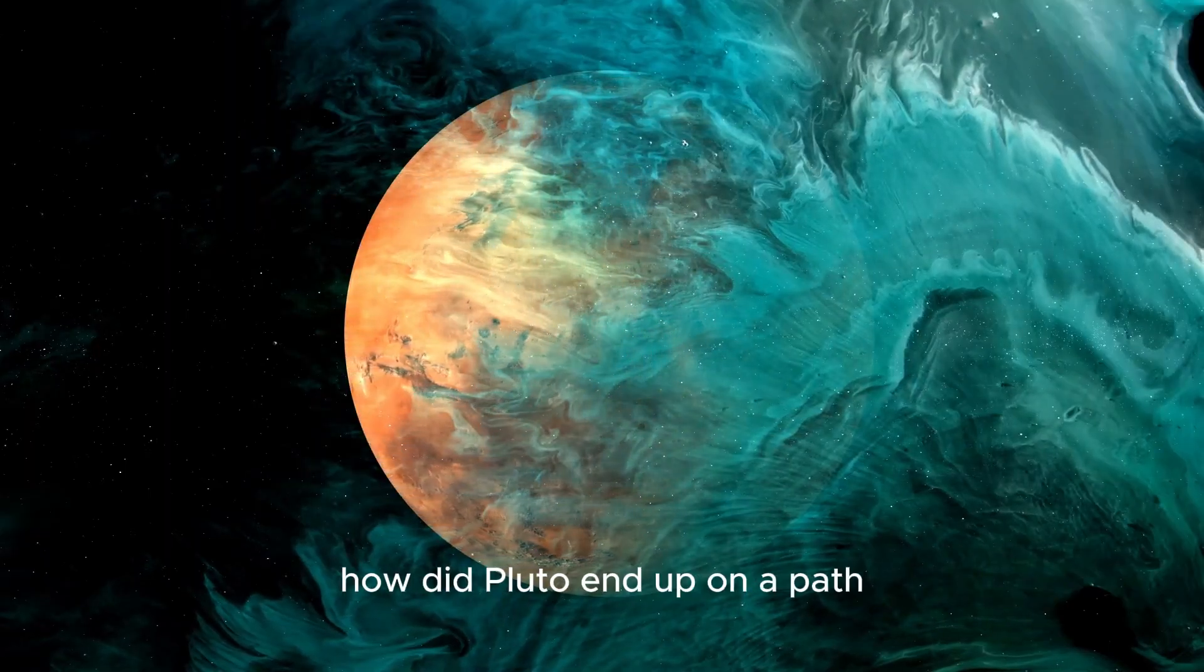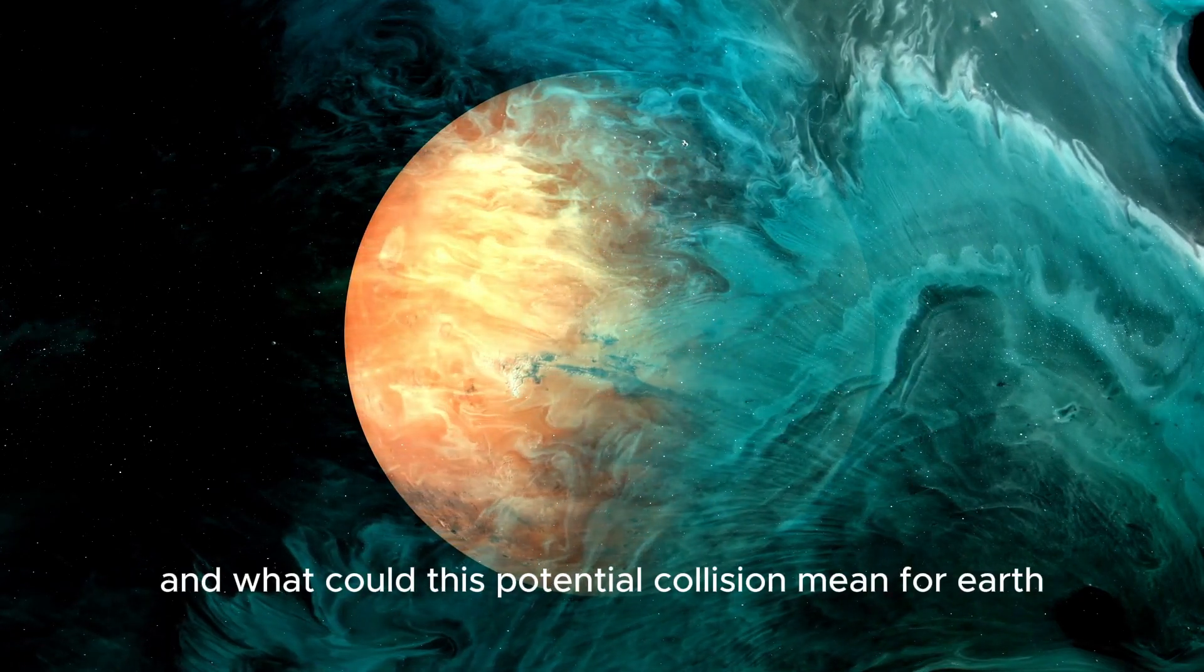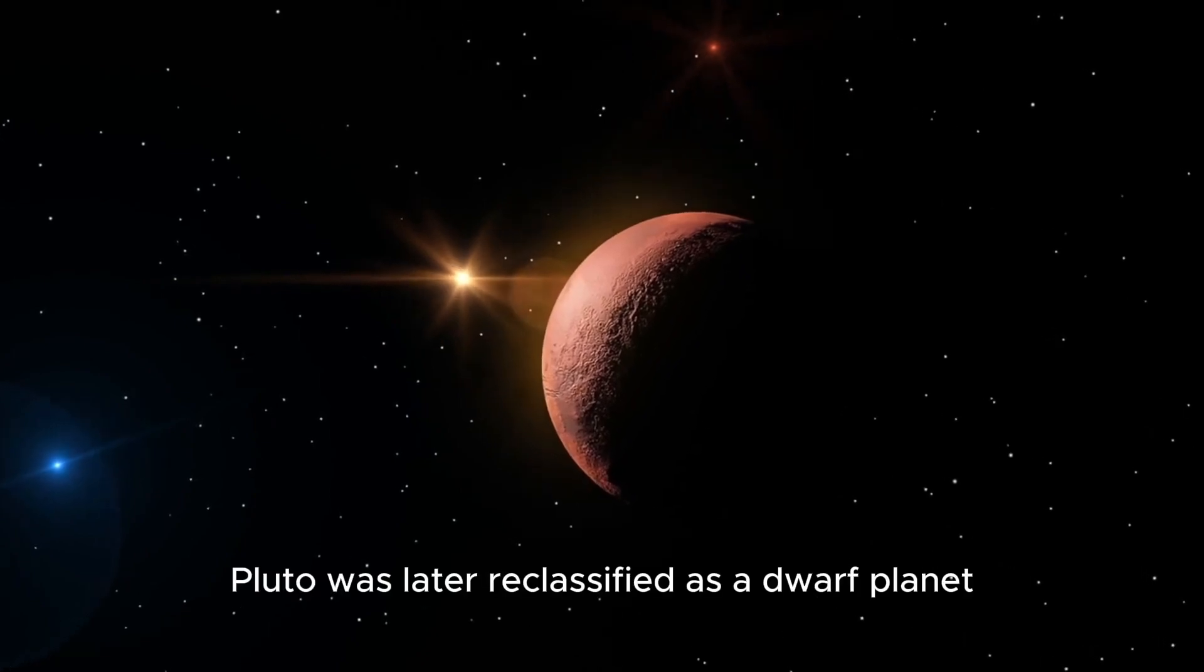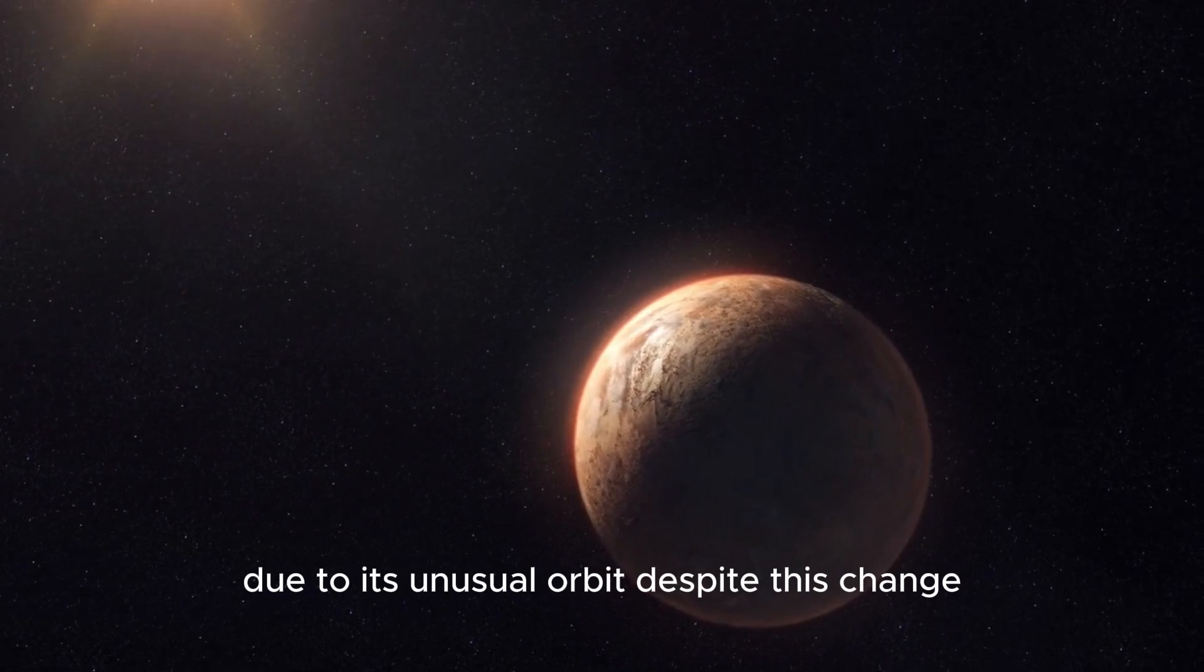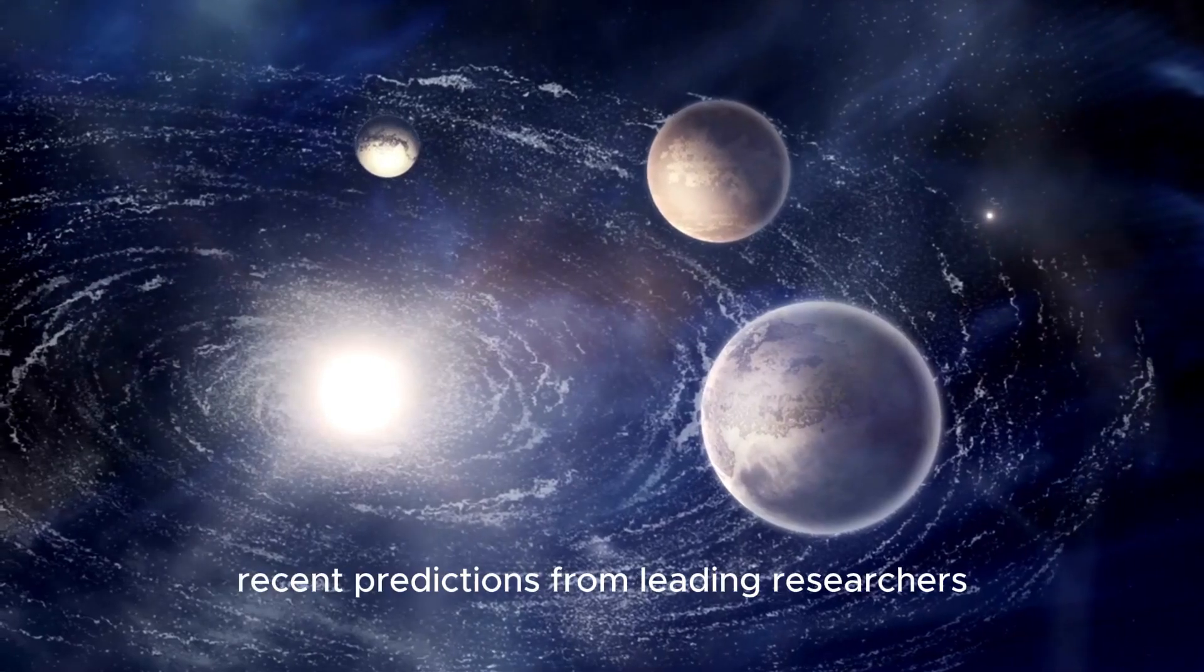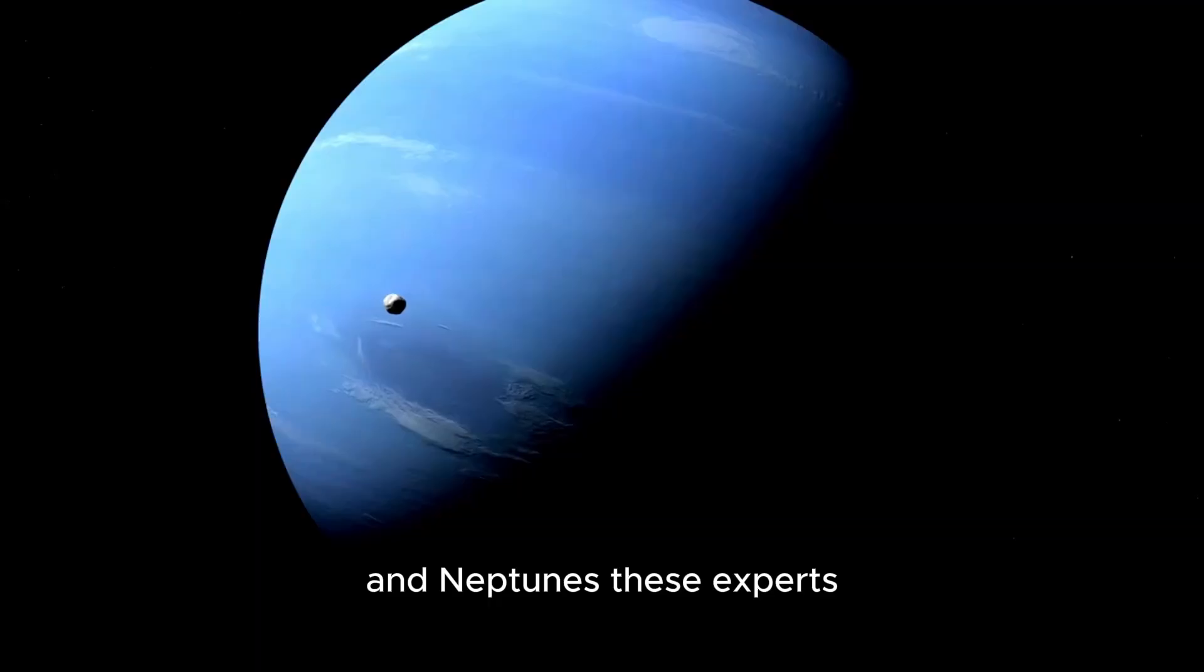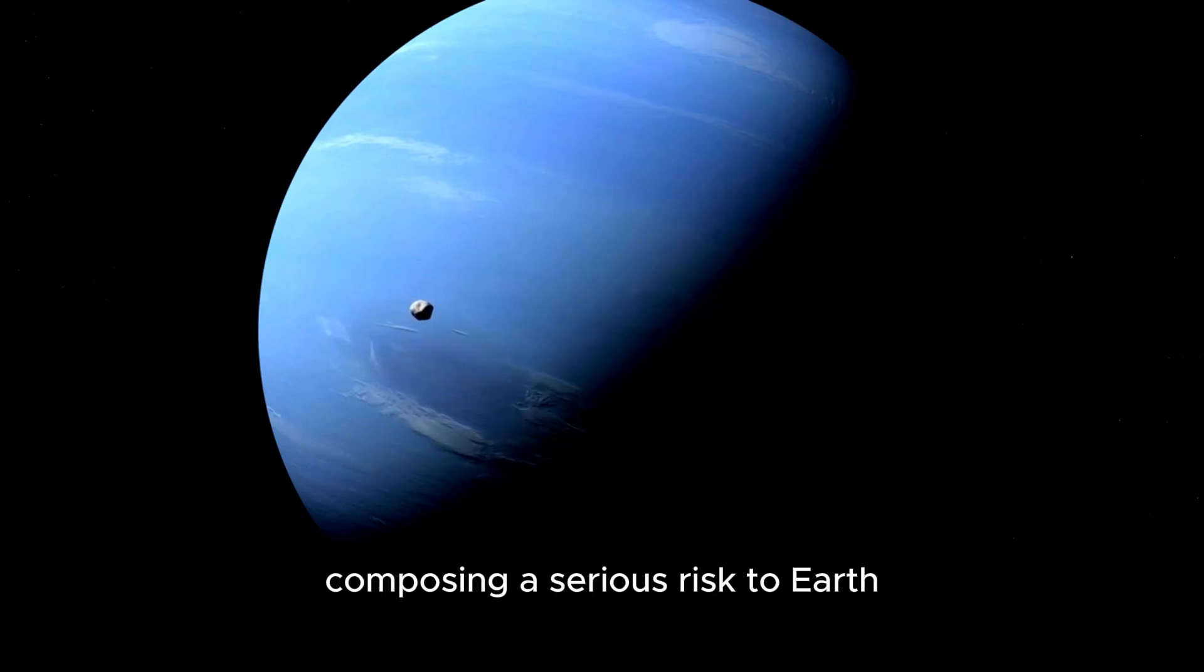So how did Pluto end up on a path toward its distant neighbor, and what could this potential collision mean for Earth? Let's explore this unfolding situation. Once recognized as a true planet, Pluto was later reclassified as a dwarf planet due to its unusual orbit. Despite this change, it continues to fascinate astronomers. Recent predictions from leading researchers indicate a concerning closeness between Pluto's orbit and Neptune's, posing a serious risk to Earth.